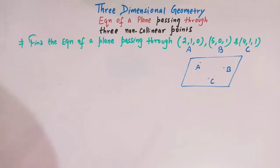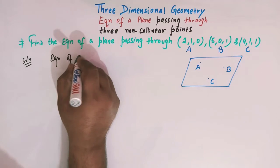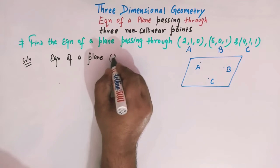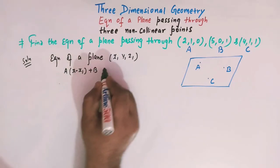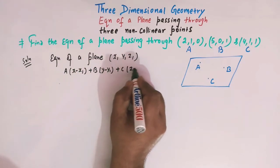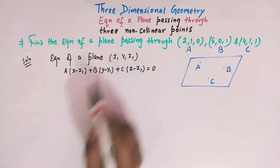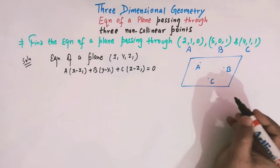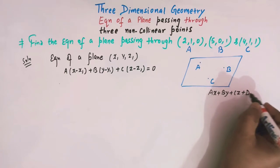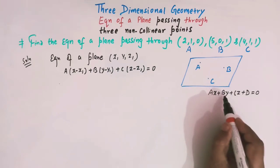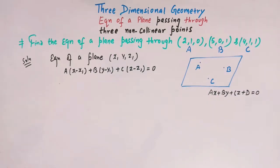We will make use of the result that the equation of a plane passing through some point (x1, y1, z1) is given by: a(x − x1) + b(y − y1) + c(z − z1) = 0. We already know that the general Cartesian equation of a plane is given by ax + by + cz + d = 0, where the coefficients a, b, c are the direction ratios of the normal to the plane.